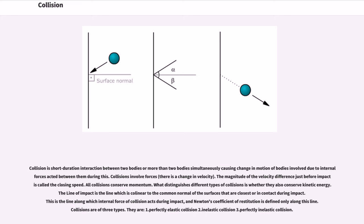What distinguishes different types of collisions is whether they also conserve kinetic energy. The line of impact is the line which is collinear to the common normal of the surfaces that are closest or in contact during impact. This is the line along which internal force of collision acts during impact, and Newton's coefficient of restitution is defined only along this line. Collisions are of three types.